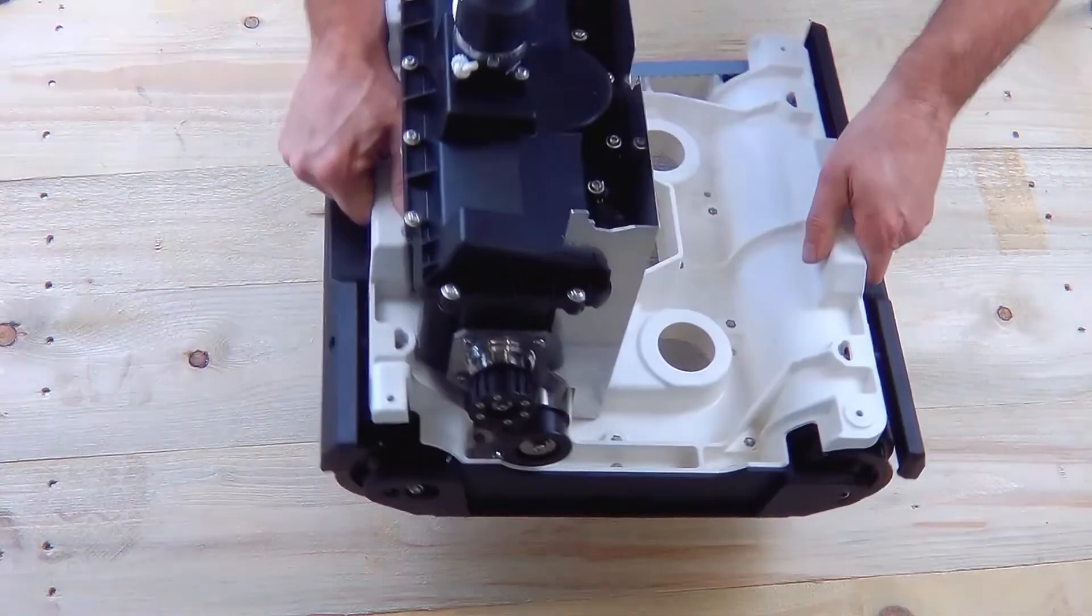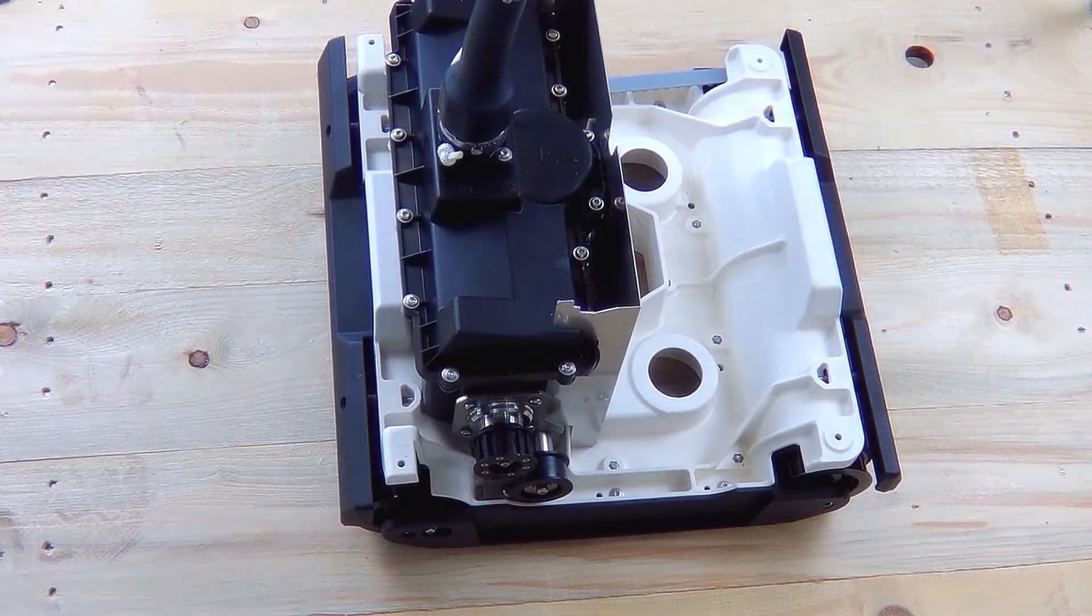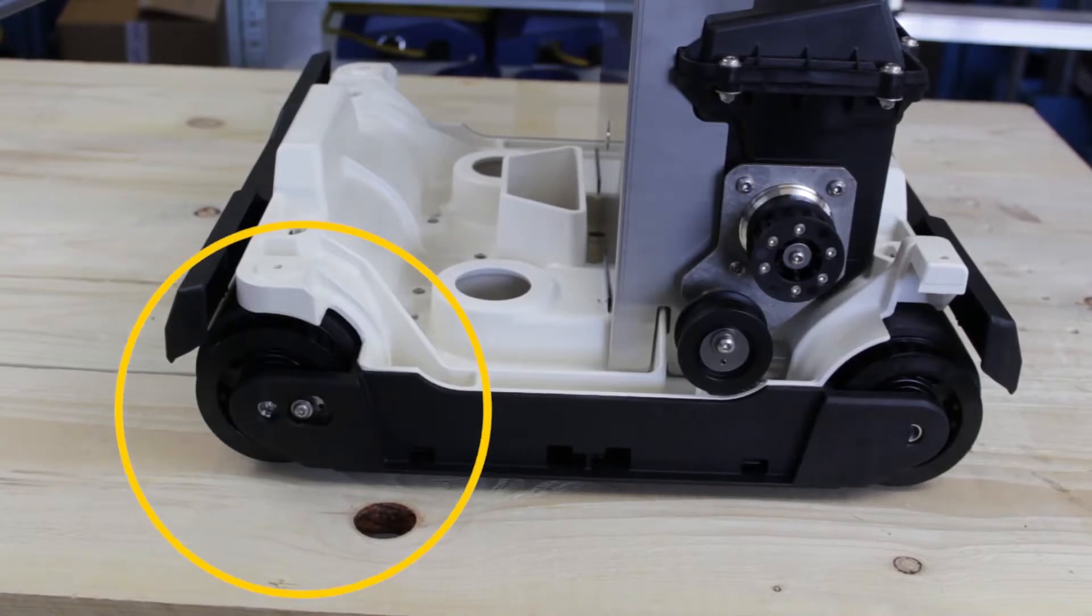Now we turn the club liner around and do the same on the other side. We then loosen the marked screw slightly.